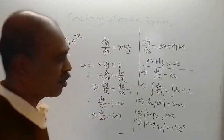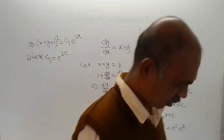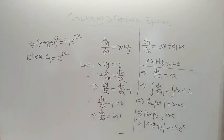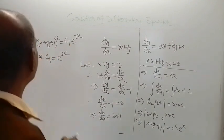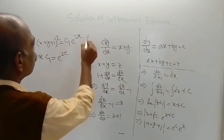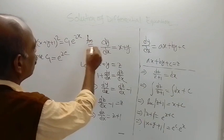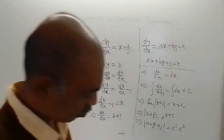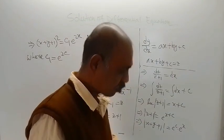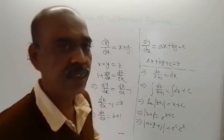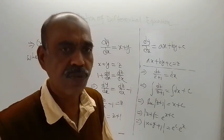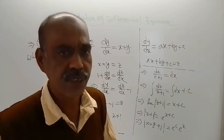So this is the end of the problem. This is the solution to the given problem. C₁ is a constant where c₁ equals e to the power 2c. Thank you for watching this video. Have a wonderful day.